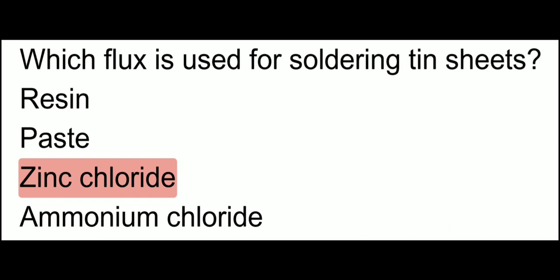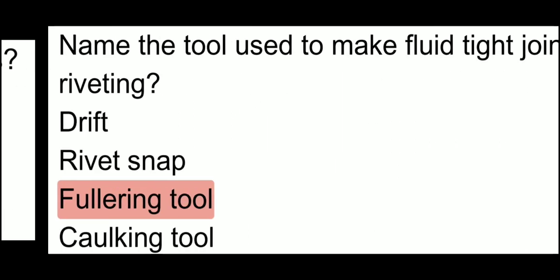Which flux is used for soldering a tin sheet? We have a tin sheet and need to solder it. Which flux should be used? Zinc chloride. Zinc chloride is used as a flux in soldering of tin sheet.